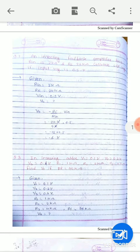And second example: inverting feedback amplifier has Rin 2 kOhm, RF 24 kOhm. Calculate output voltage if input voltage is 0.5 volt.